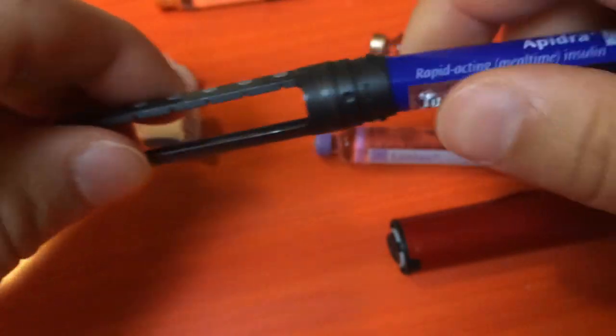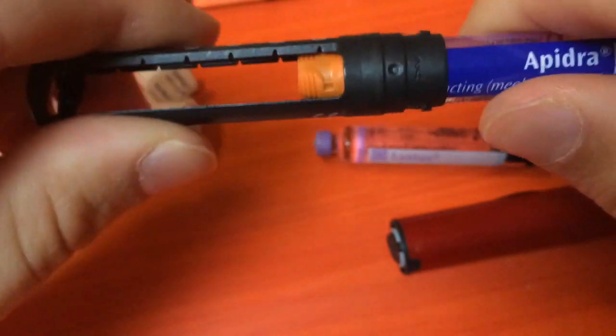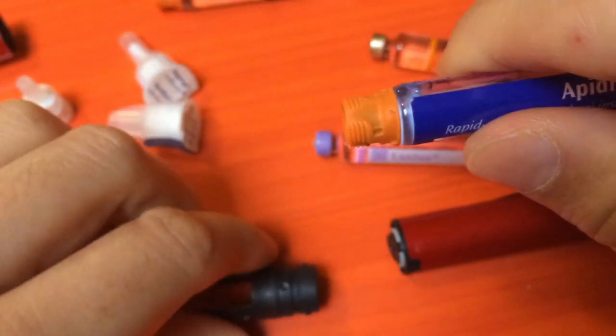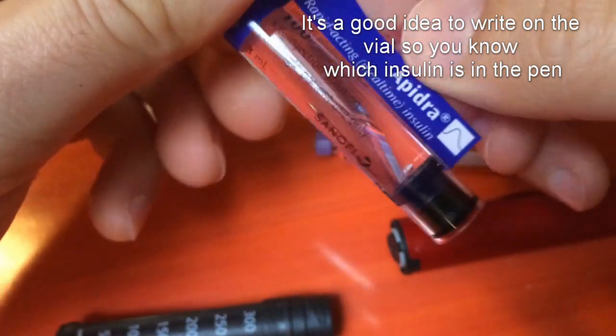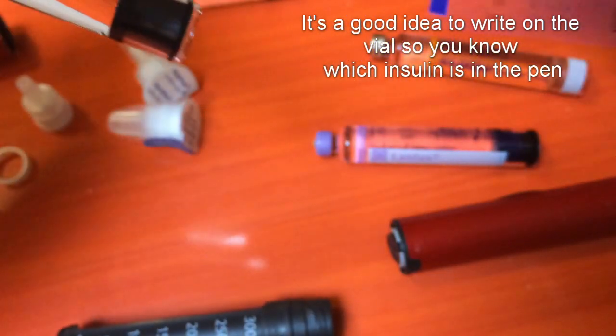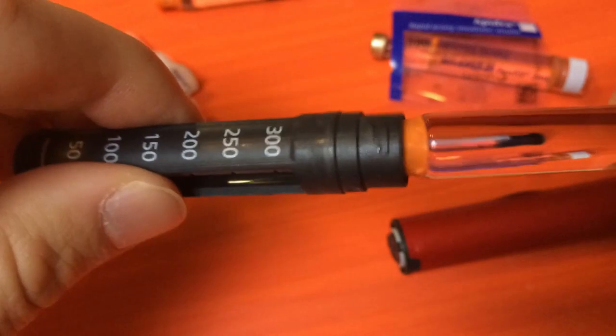Second step: if you try to put an Apidra vial straight in, it's too thick and it doesn't fit. So you take off the sticker, and then it fits perfectly.